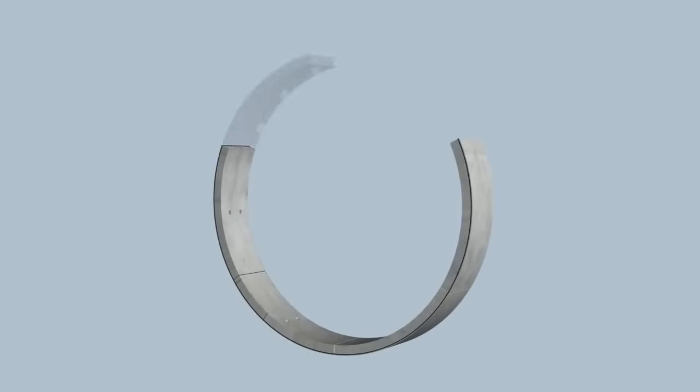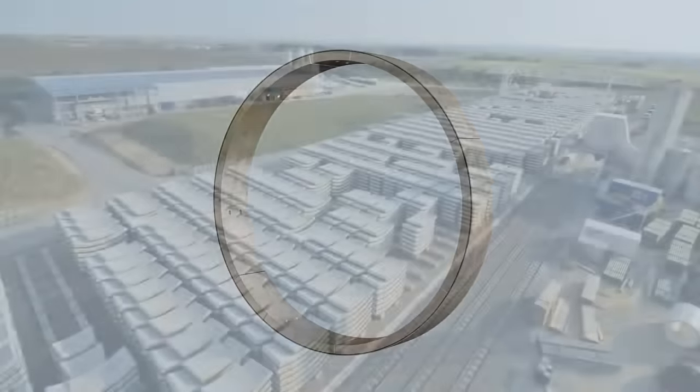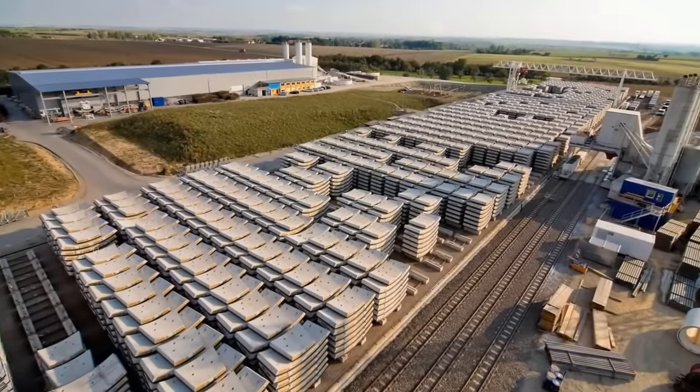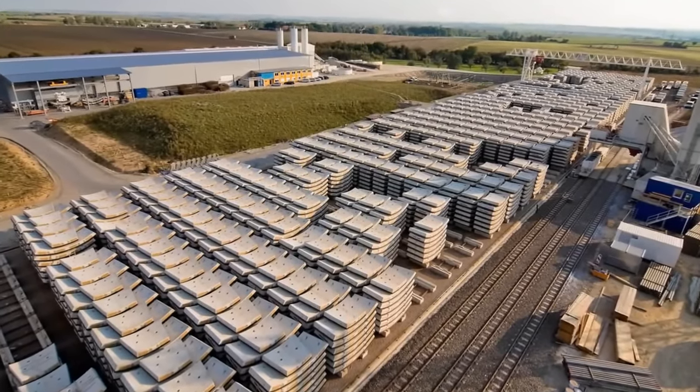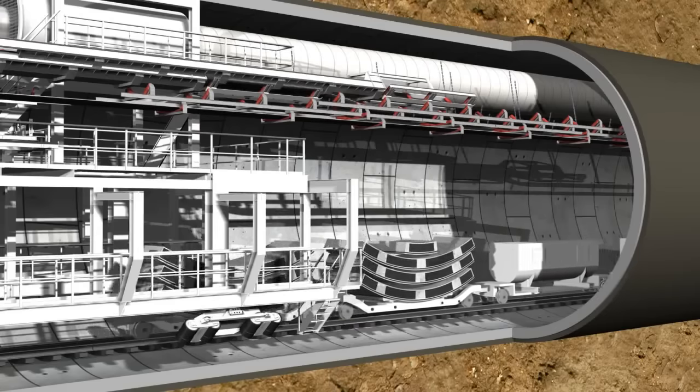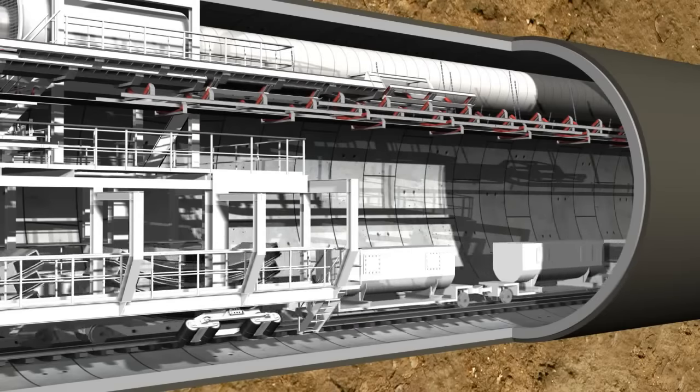A complete tunnel ring consists of several segments, called lining segments. These prefabricated reinforced concrete elements are produced with millimeter precision in a factory which is especially installed above ground for this purpose. Following quality control, they are then transported into the tunnel by mine cars.